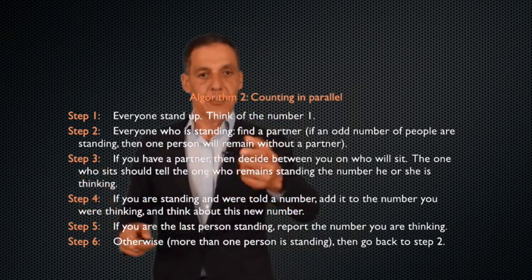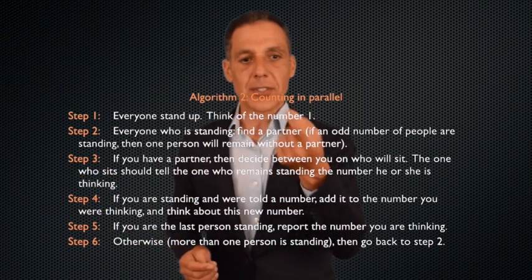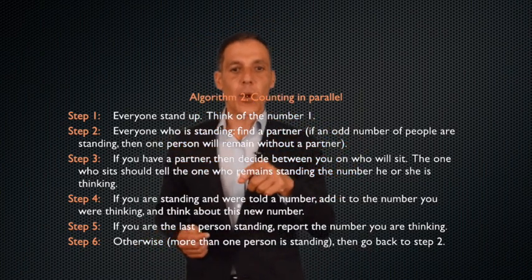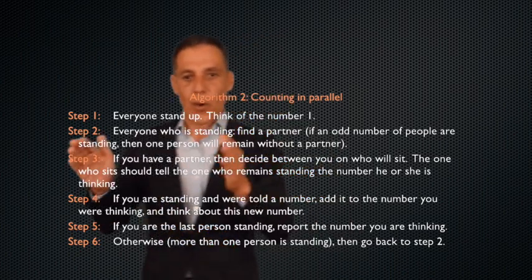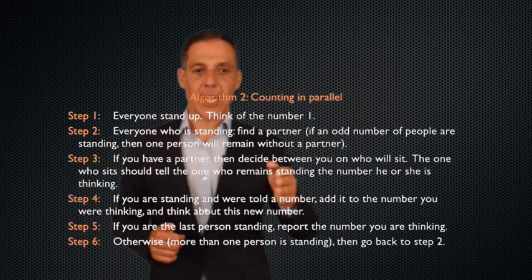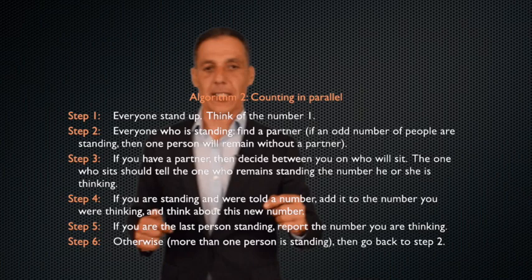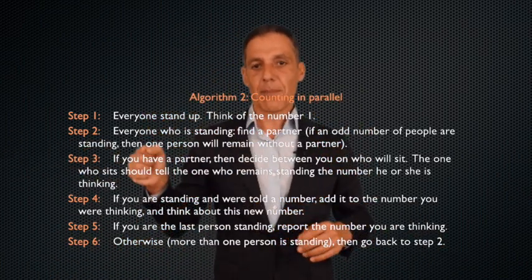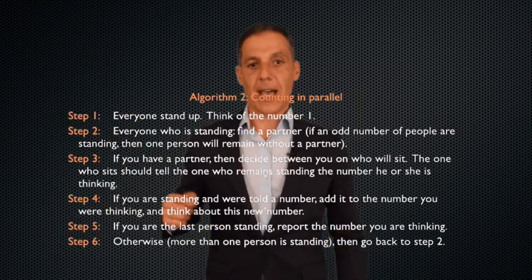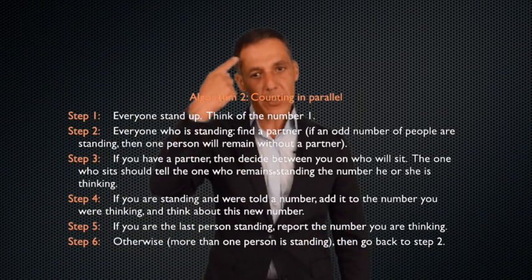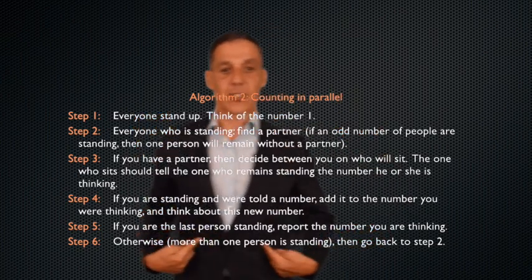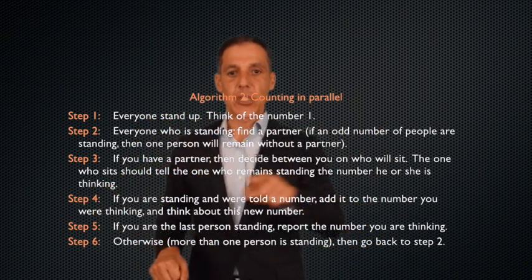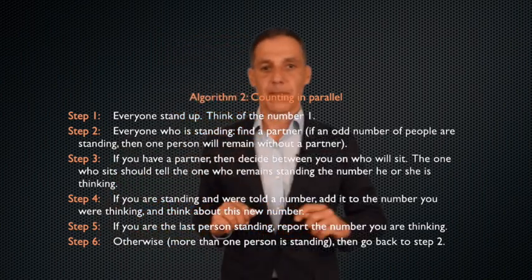Now, if you have a partner, then decide between the two of you who will sit down. The one who sits should tell the one who remains standing the number he or she is thinking. So 100 people stand up. We all have the number one in our head. I partner up and I decide you're going to sit down and you tell me your number. So now I have two numbers, one and one. If I'm standing and you were told the number, step four, add it to the number you were thinking and that's now your new number.